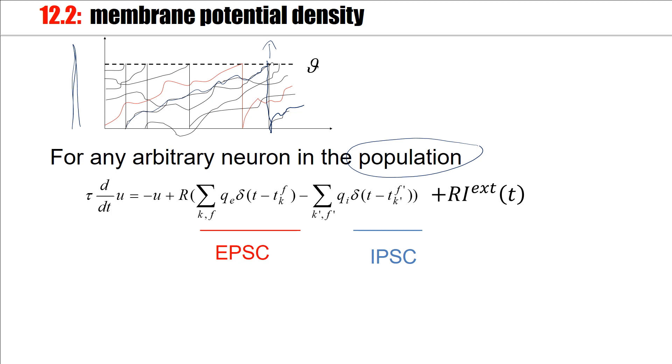For each of these neurons, the membrane potential follows a differential equation. It changes, there's a decay term going back to rest, set here to zero, and then our spike arrivals: excitatory positive potentials and inhibitory, which means a negative postsynaptic potential. There might also be an external input, which is the same for all neurons.